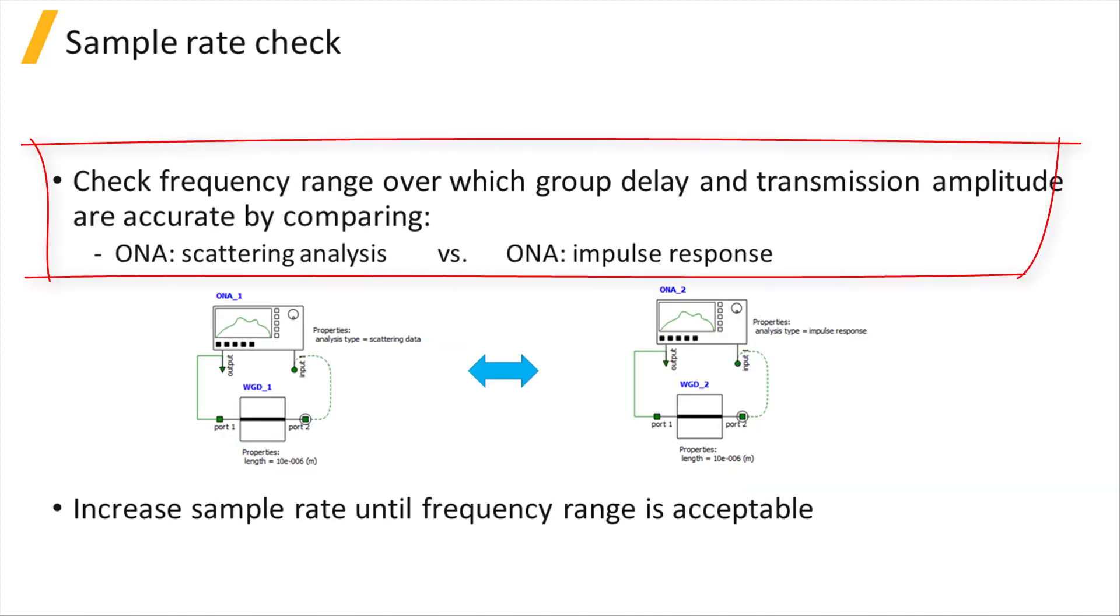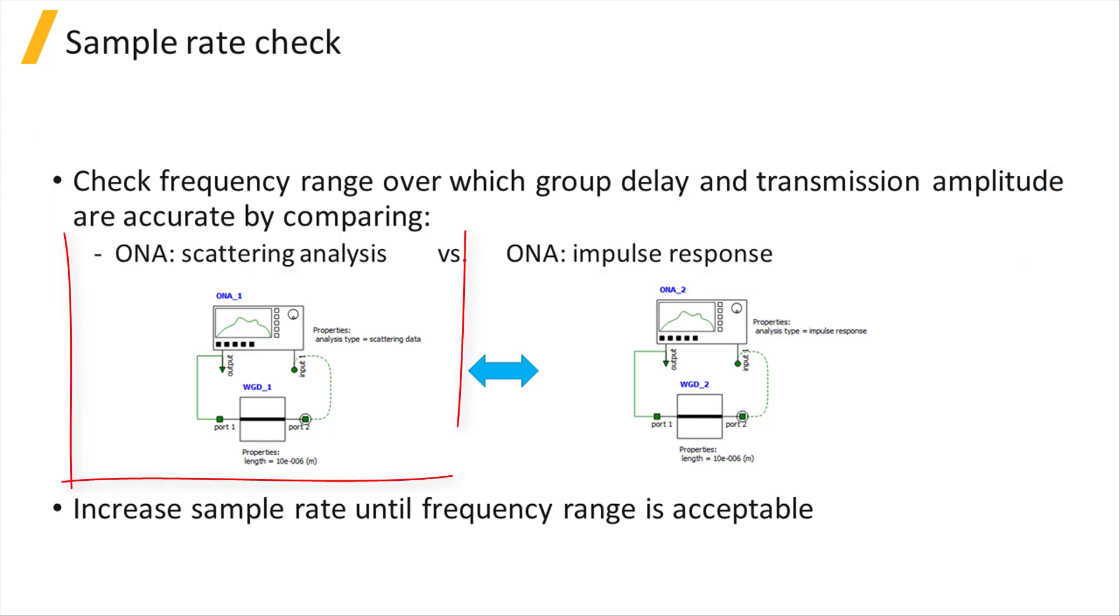One way to check whether your sample rate is sufficiently high is by comparing the results from Frequency and Time Domain Optical Network Analyzer simulations. Connect your element to an ONA with the Analysis Type set to Scattering Data.